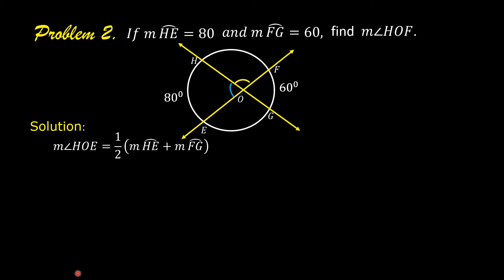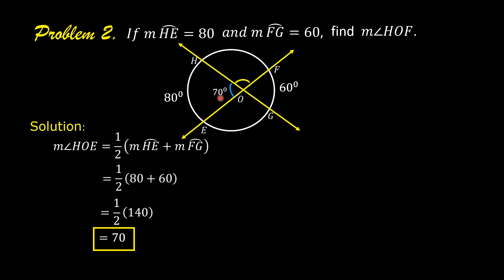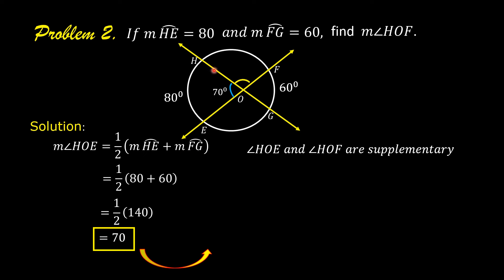This is now equal to one-half times the quantity 80 plus 60, which is one-half of 140. And one-half of 140 is equal to 70. So the measure of angle HOE is equal to 70 degrees.